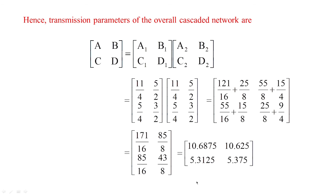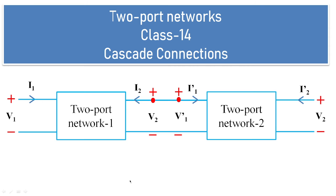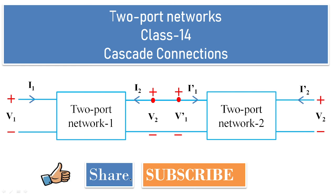This is the cascade connection output of the transmission line parameters for the given network. I hope you understood this basic concept of cascade connection. Please share among your friends, subscribe to the channel, and press the like button for notifications. Thank you.